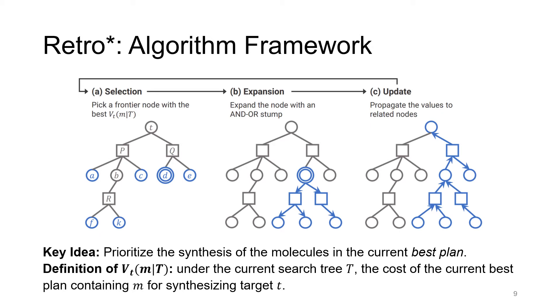In each step of RetroStar, we first select a frontier node with the best Vt(m|T). Then we expand the selected node using the one-step model into a two-level sub-tree, where in the first level, there are up to k reaction candidates returned by the one-step model, and then under each reaction candidate, there are the corresponding reactants. In the end of each step, we then back-propagate the values from the newly expanded sub-tree to related nodes to maintain the computation of Vt(m|T).